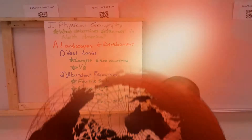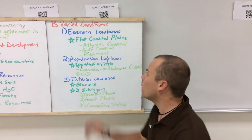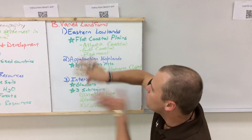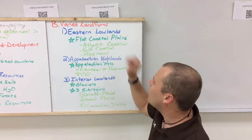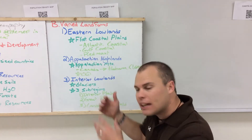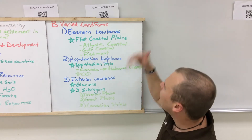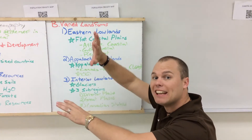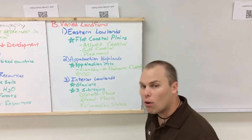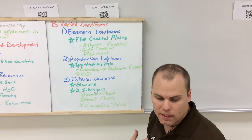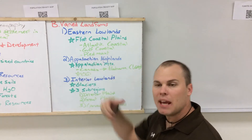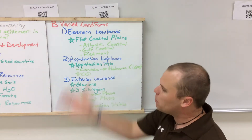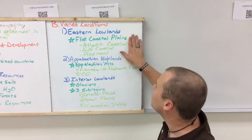Next we're looking at varied landforms of the United States and Canada. The first are the eastern lowlands — the flat coastal plains on the eastern areas. The Atlantic coastal plain runs from the northeastern United States, like New England, all the way down into Florida. From Florida down into Texas is the Gulf coastal plain. The Piedmont is the Appalachian highland area east of the Appalachian Mountains, that flat area between the mountains and the Atlantic coast.